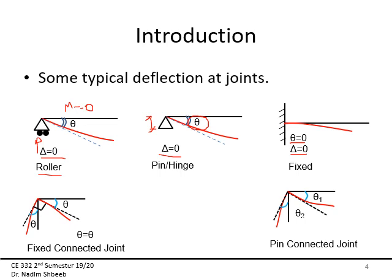For frames with a fixed-connected joint, a 90-degree angle is maintained between members before and after deformation. The angles at each member are equal and representative of the slope of the deflected or elastic shape. Here, this is my deflected shape, and the slope to that deflected shape gives my angle theta, which in this case is a clockwise rotation.